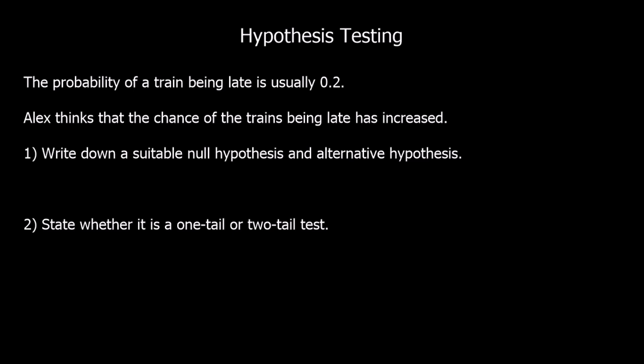This question says the probability of a train being late is usually 0.2. Alex thinks the chance of trains being late has increased. Write down a suitable null hypothesis and alternative hypothesis. The null hypothesis we write as H0 — that's what we believe to be true before we've got any evidence — so that will be that the probability is equal to 0.2.